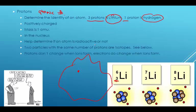Two particles with the same number of protons are called isotopes. Lithium has three protons and a mass of six. Lithium has three protons and a mass of seven. The same, but different. They have the same number of protons. Protons determine your identity. If you have three protons, you're lithium.